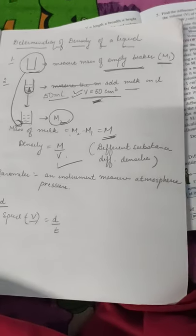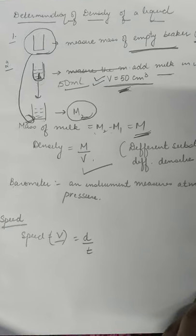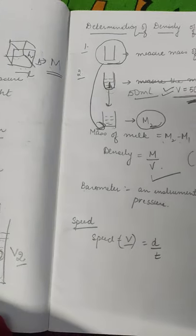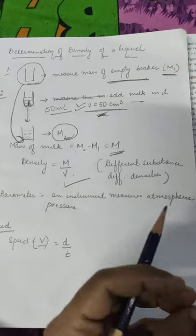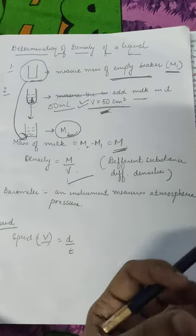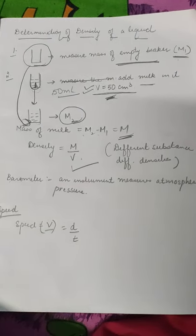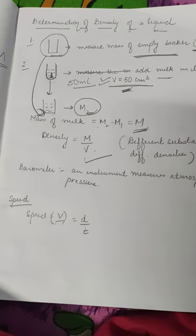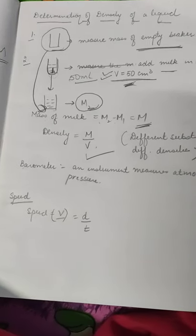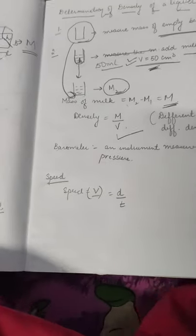Do you know — a barometer is basically an instrument to measure atmospheric pressure. Mercury is used in a barometer because it has high density, so that it can give you the exact reading for both very low pressure and very high pressure.